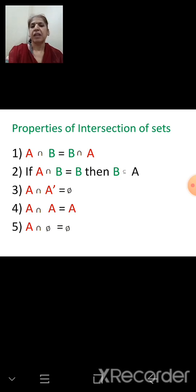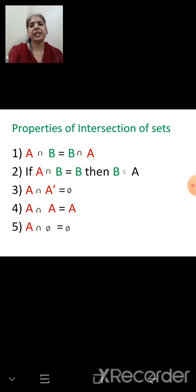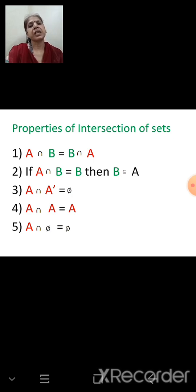Properties of intersection: A ∩ B equals B ∩ A. If A ∩ B equals B, then B is a subset of A. A ∩ A complement is the empty set (φ), since there are no common elements between a set and its complement. A ∩ A equals A. And A ∩ empty set equals the empty set.